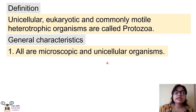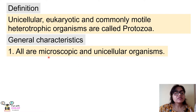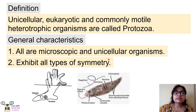Since protozoans are made up of only one cell, and a cell is the building block and smallest part of every organism, we cannot see the cell with the naked eye — hence we need a microscope to see protozoans. So all protozoans are microscopic and unicellular organisms.